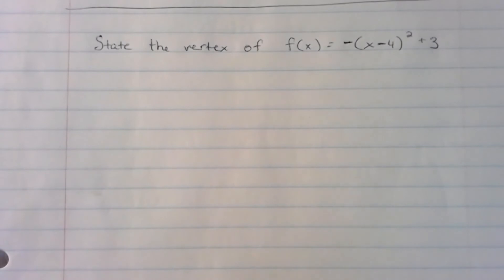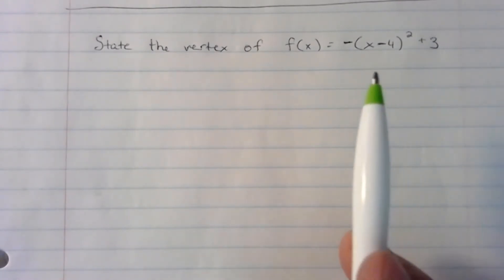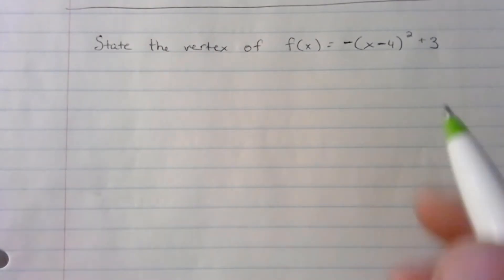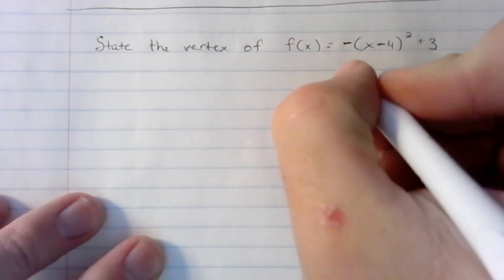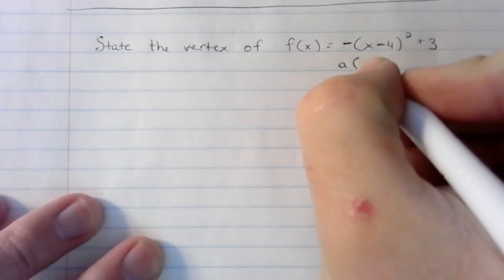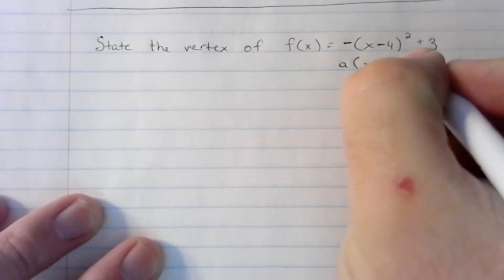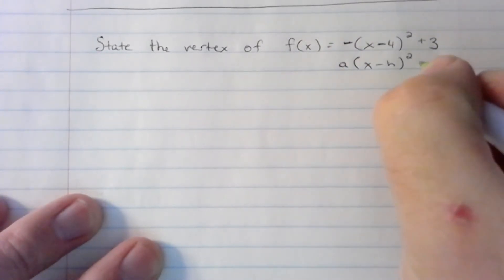We are in vertex form given this format. If you remember vertex form: A parentheses X minus H, quantity squared, plus K.